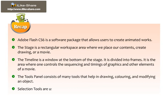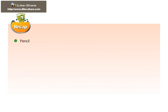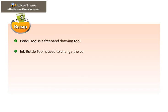Selection tools are used to select a single or multiple objects on the stage. Pencil Tool is a freehand drawing tool. Ink Bottle Tool is used to change the color, width, or style of the strokes.